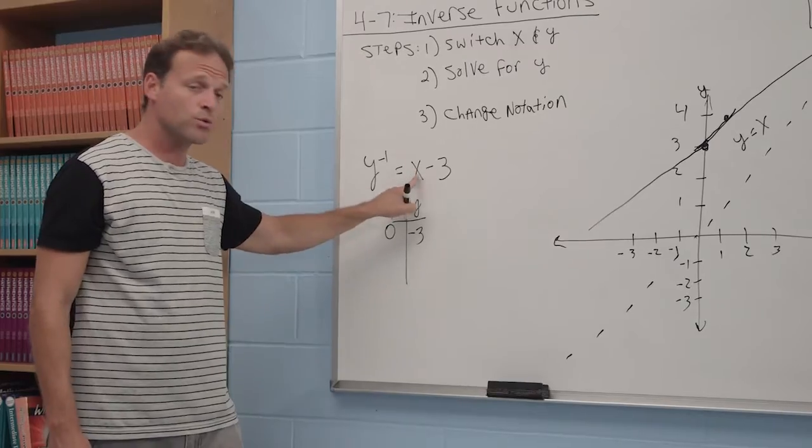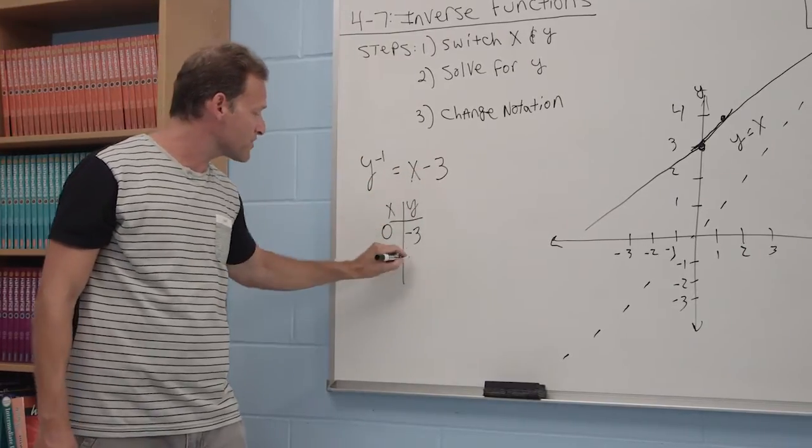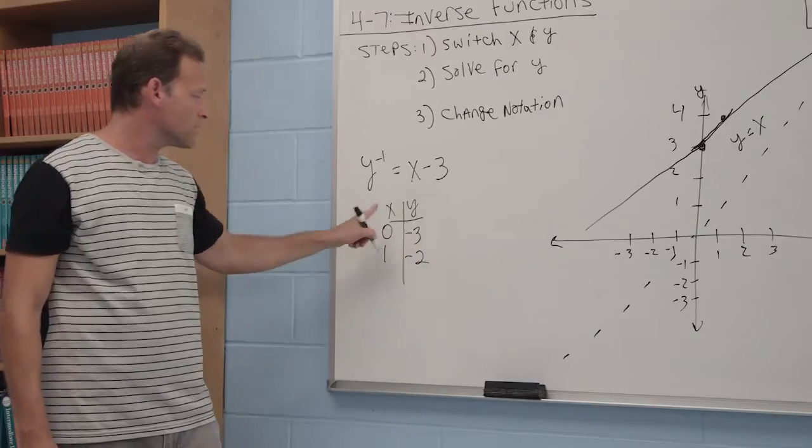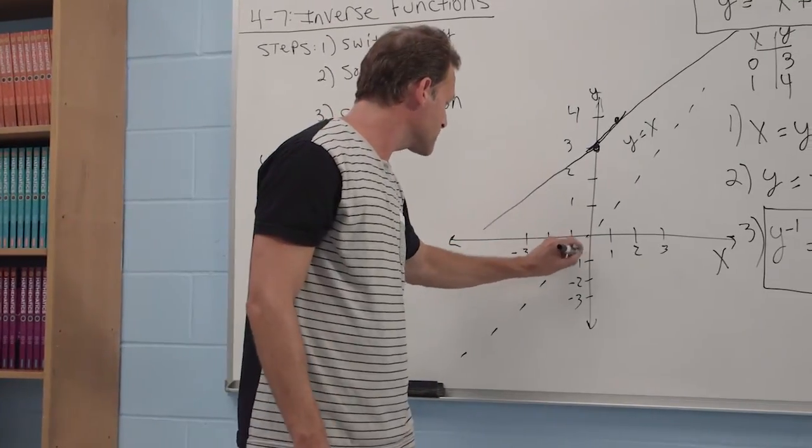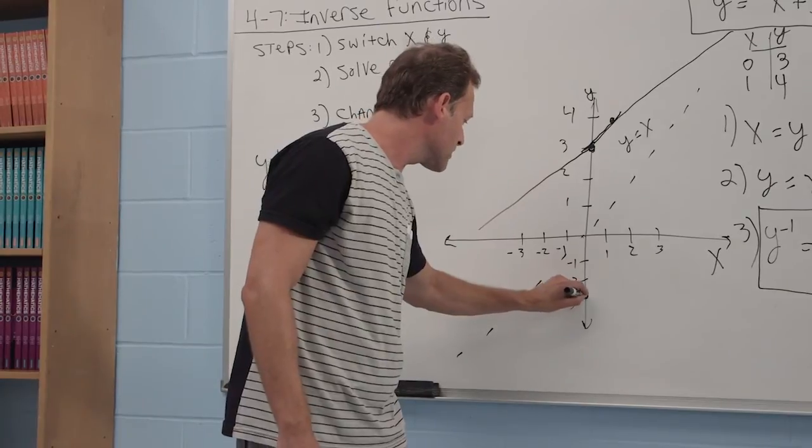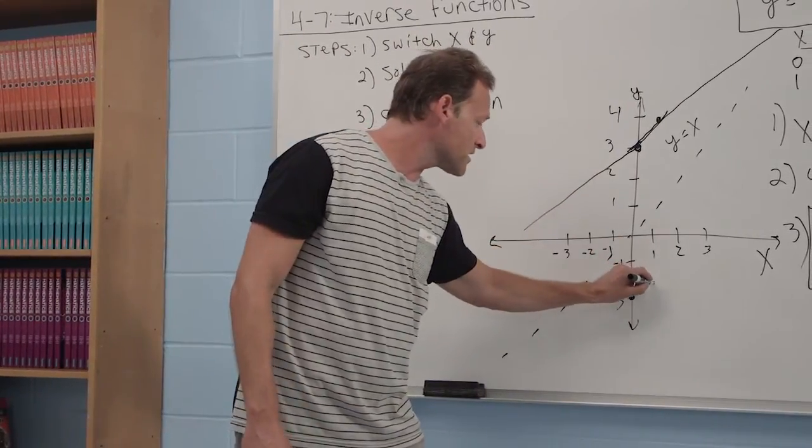When x is equal to 1, y is equal to 1 minus 3, which is negative 2. Let's plot these points. When x is 0, y is negative 3. When x is 1, y is negative 2.